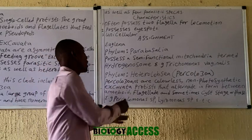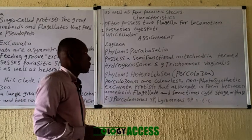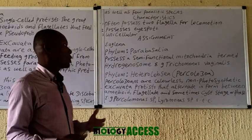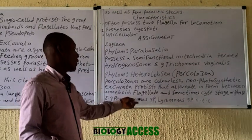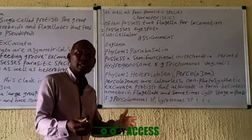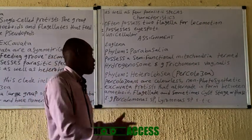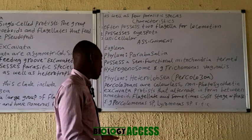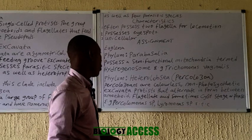The last phylum for the Excavata is the Heterolobosea, which are colorless, non-photosynthetic, unicellular protists. They alternate between an amoeboid form and a flagellate form. They assume the amoeboid form when food or resources are plentiful in the environment, while they assume the flagellate form when there is a need for fast movement or locomotion.